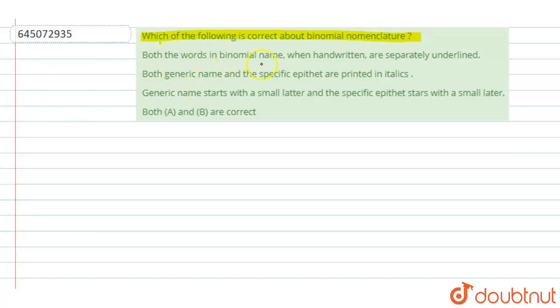Option 1 says both the words in binomial nomenclature when handwritten are separately underlined. Option 2 says both generic name and specific epithet are printed in italics. Option 3 says generic name starts with a small letter and specific epithet starts with a small letter. And the last option says both A and B are correct.